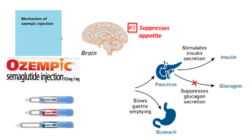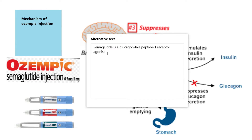In this video we will talk about what is the mechanism of action and how Ozempic works in the body to reduce weight and control the sugar level in diabetes type 2 patients. Ozempic contains semaglutide.